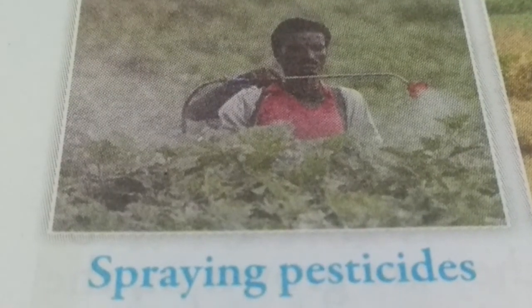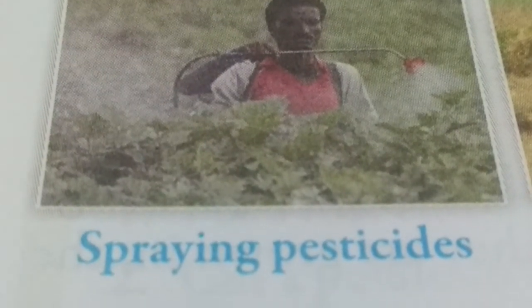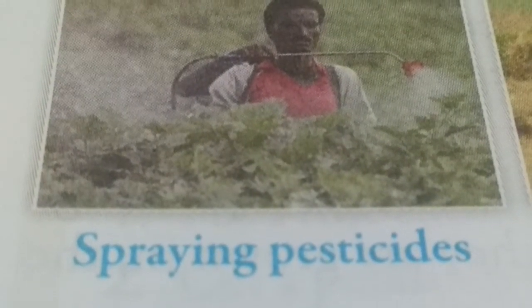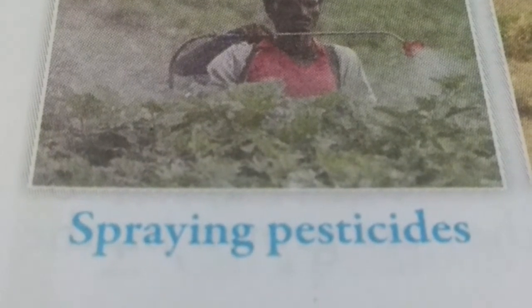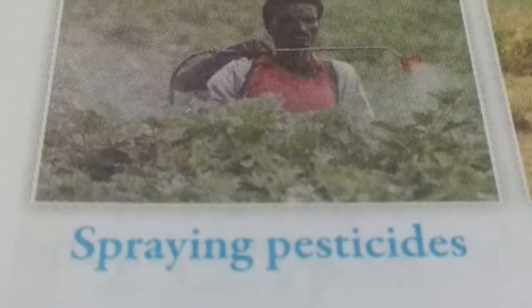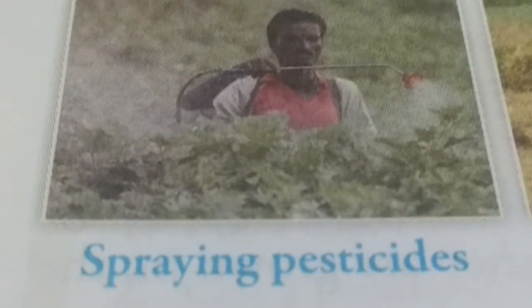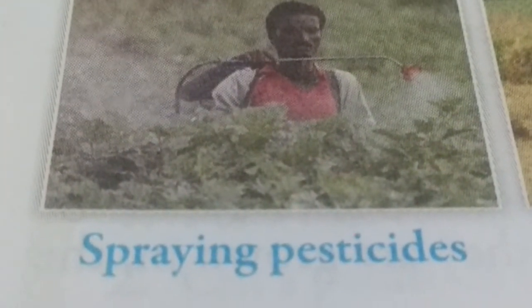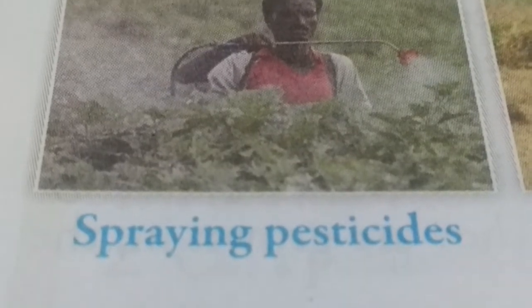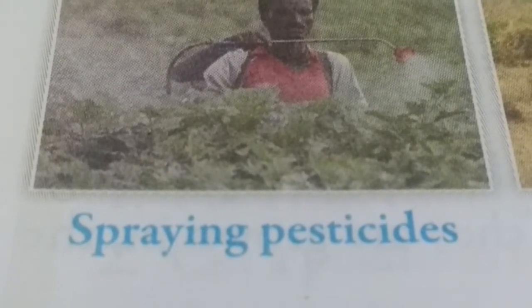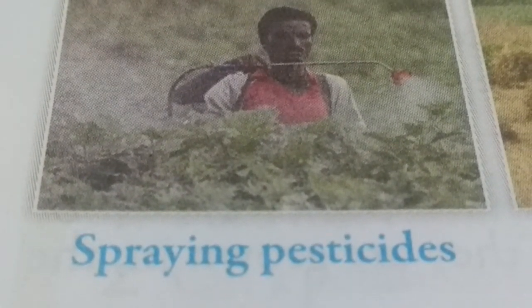The fifth step is protecting the land from weeds and pests. Pesticides and insecticides are sprayed to protect the crops from pests.